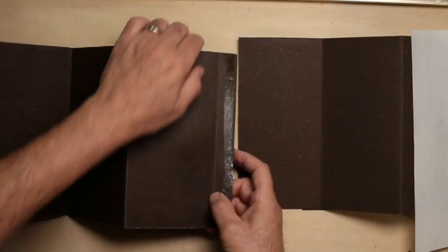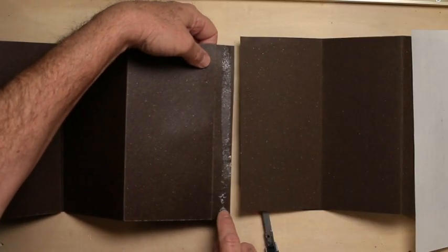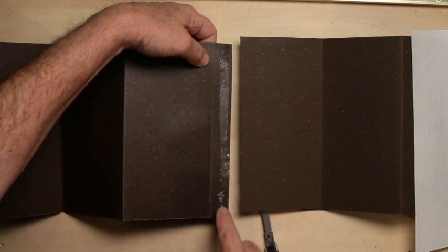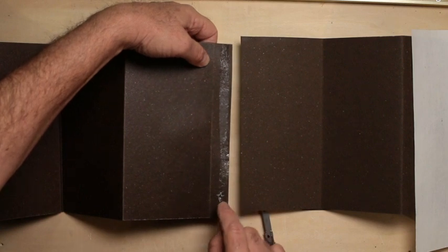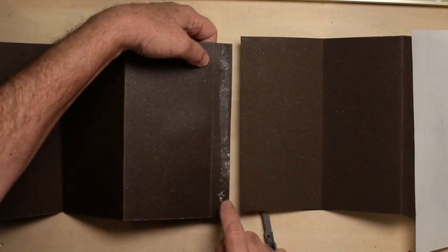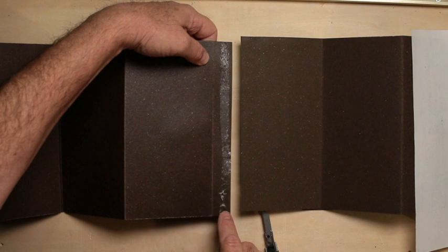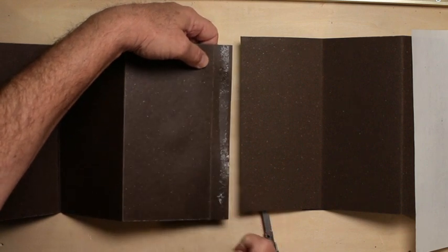So now you can still see the dry mount film on this edge here. And I want to reuse this, so I'm not going to spend time taking this off.